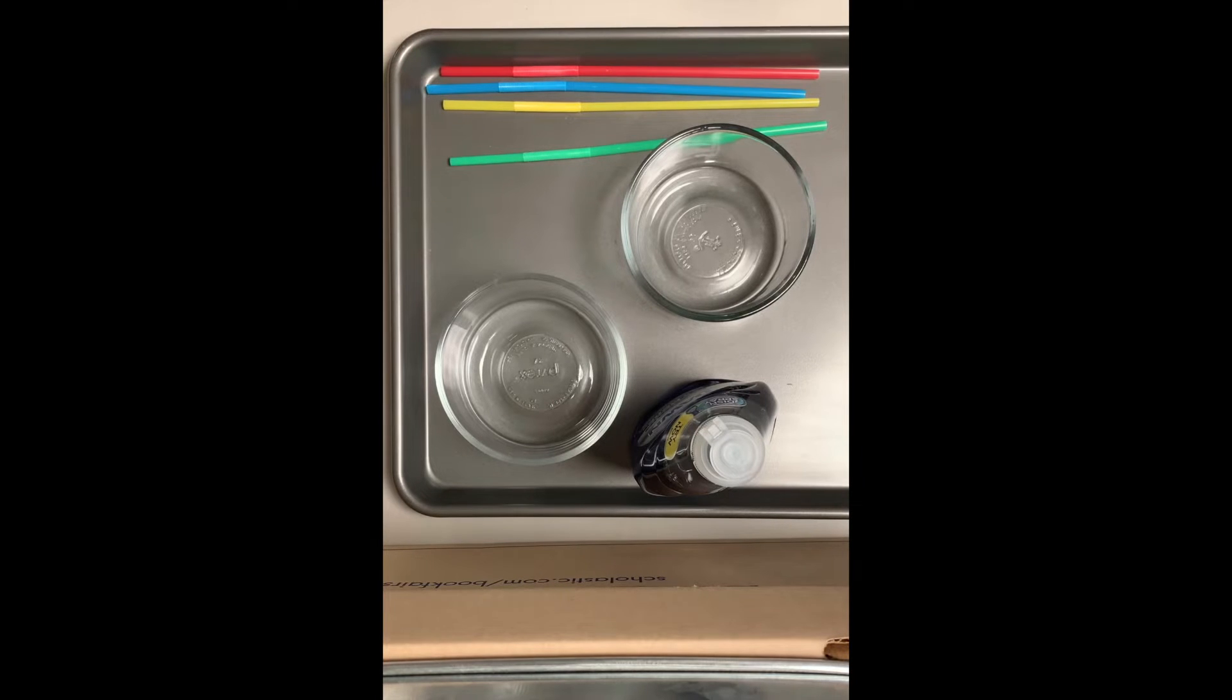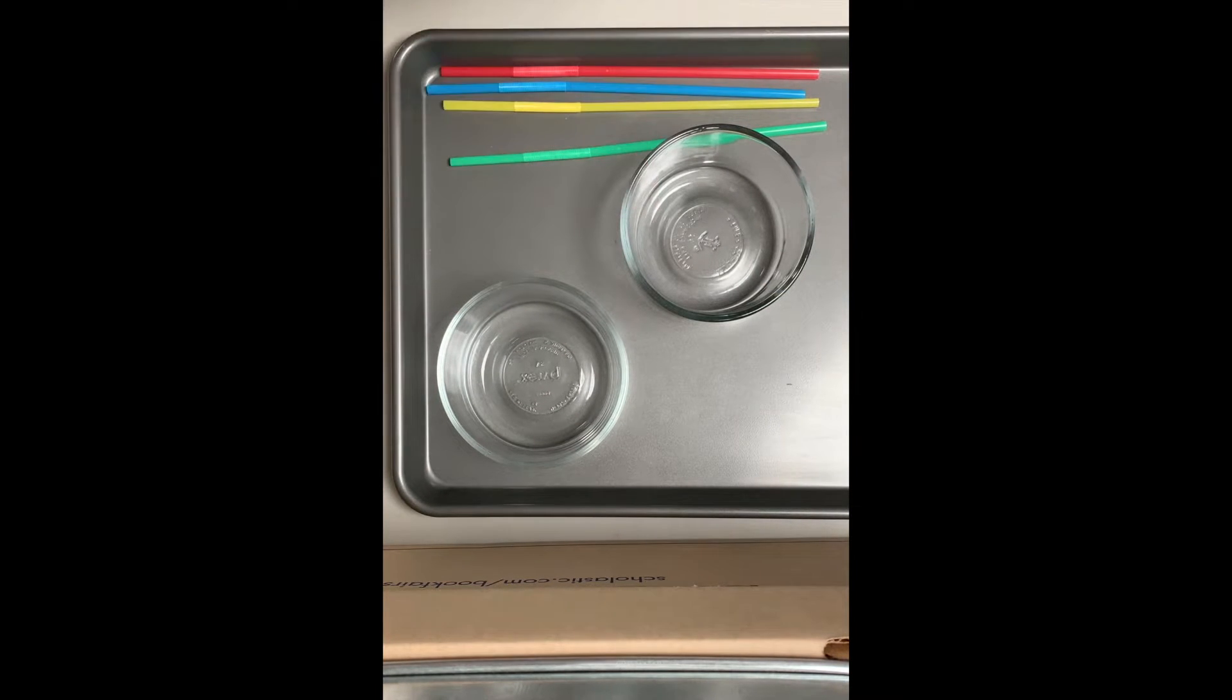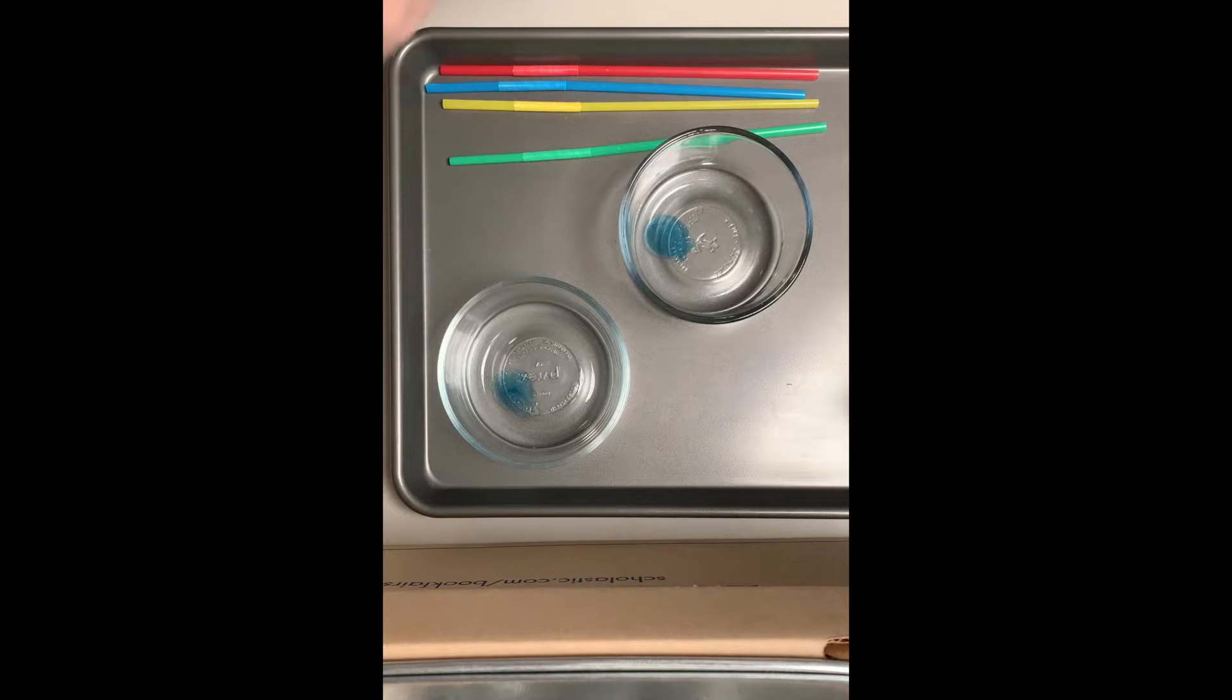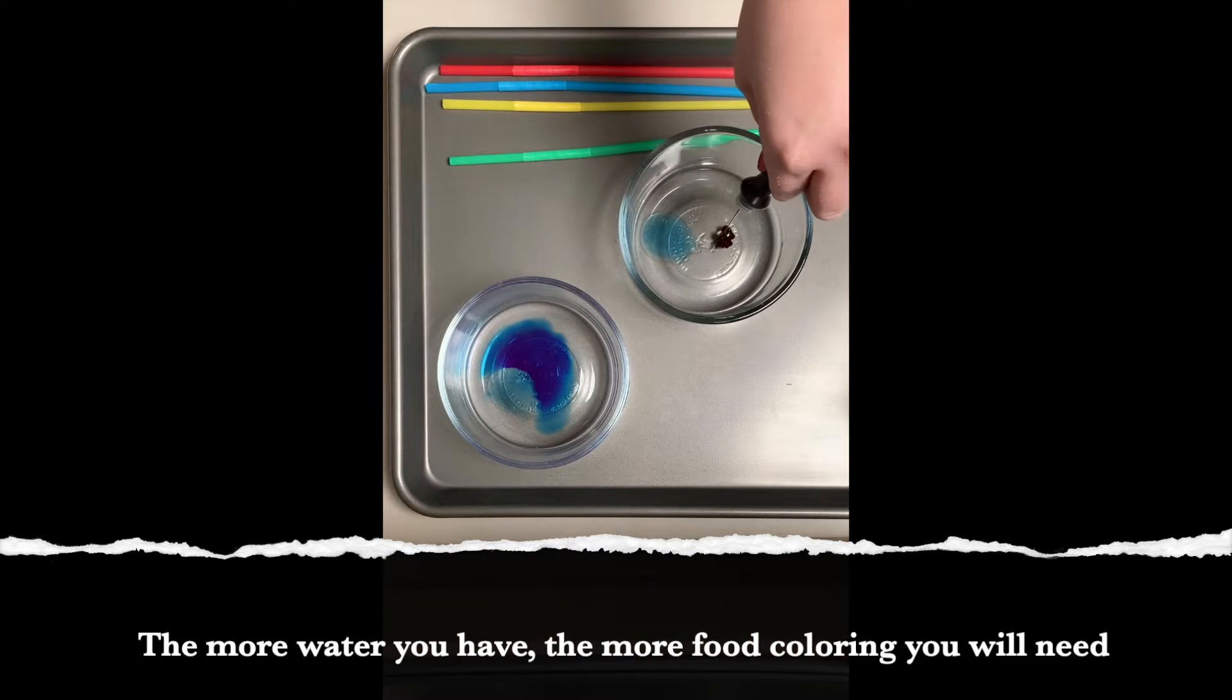First we're going to add a small amount of soap to our cup of water. So we add just a little bit of soap and then we're gonna add a small amount of food coloring, a couple drops. And remember you can always add more color if it ends up not being enough.